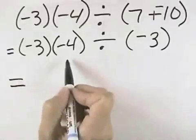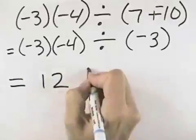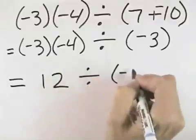A negative times a negative is a positive, and 3 times 4 is 12. So we have 12 divided by negative 3.